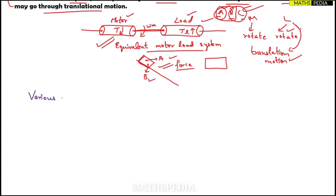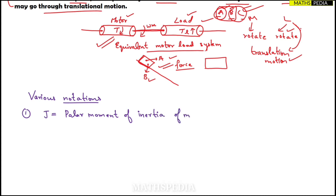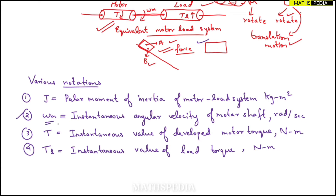Now let us look at the various notations needed to find the fundamental torque equation. First: J (capital letter) is the polar moment of inertia of the motor-load system, in kg·m². Second: ωM is the instantaneous angular velocity of the motor shaft, in rad/s. Third: T (capital) is the motor torque, and TL is the instantaneous value of load torque, both in Newton-meters.